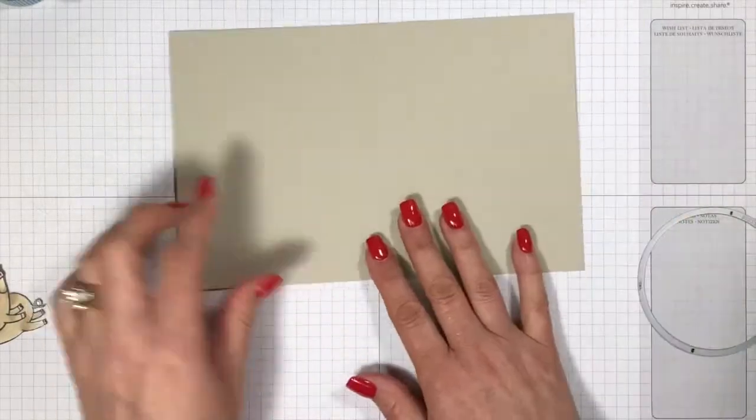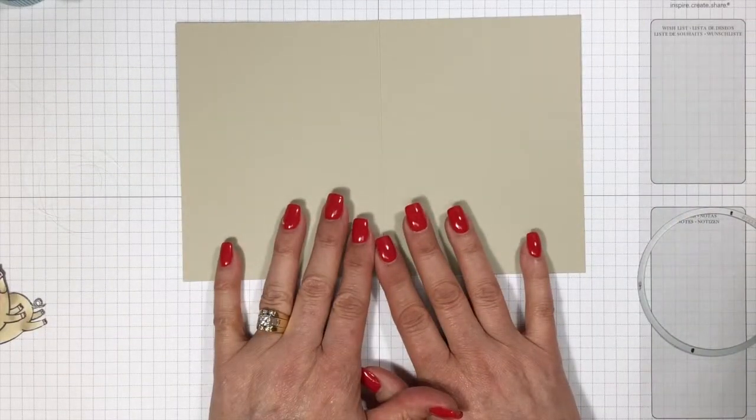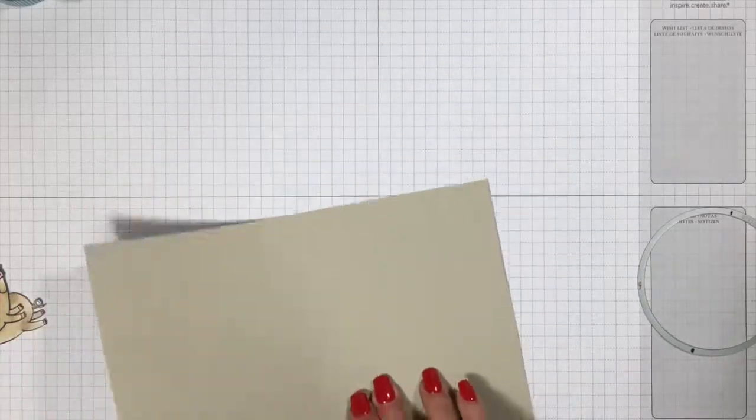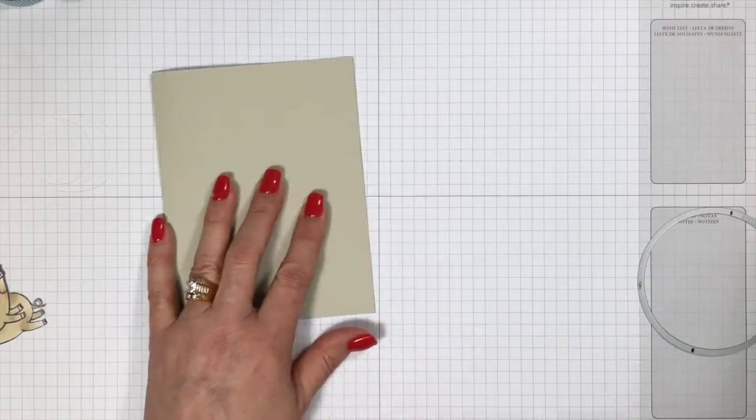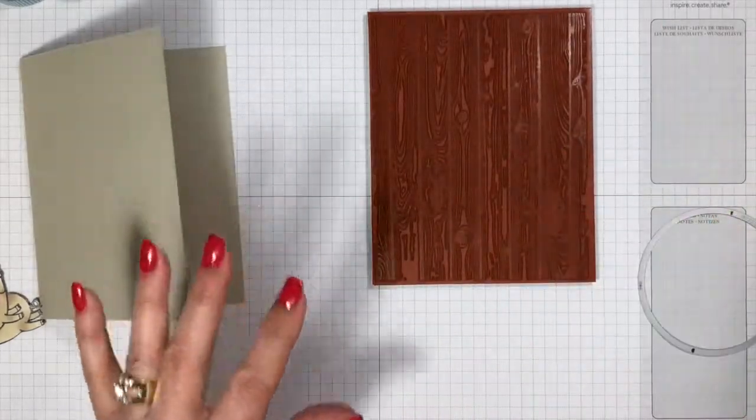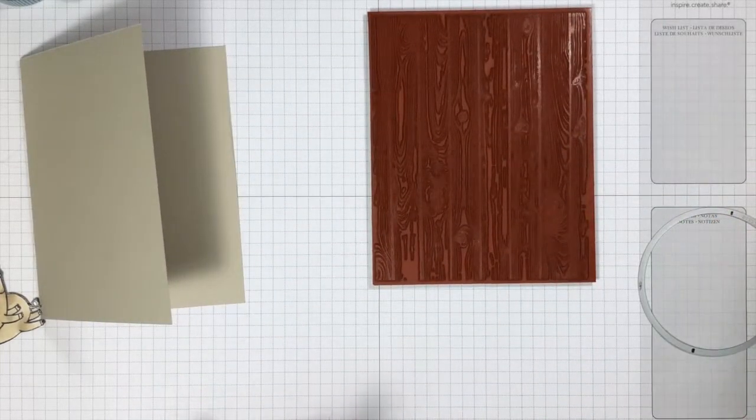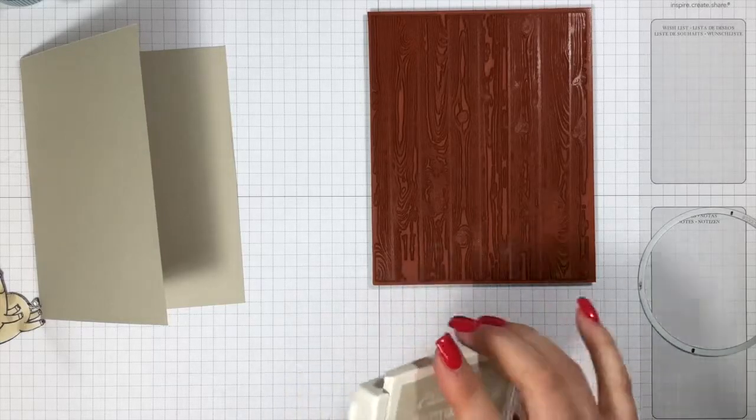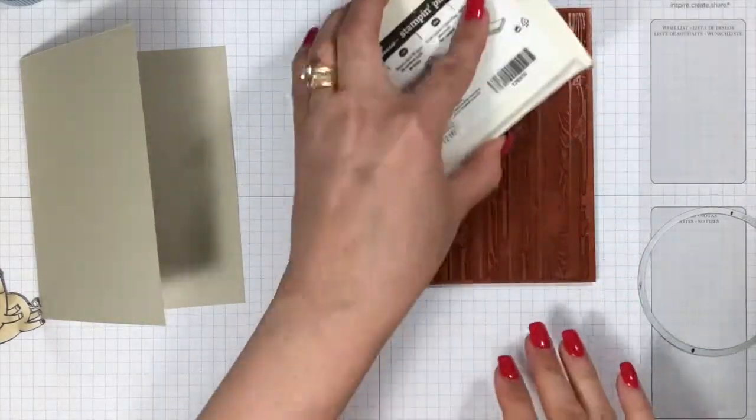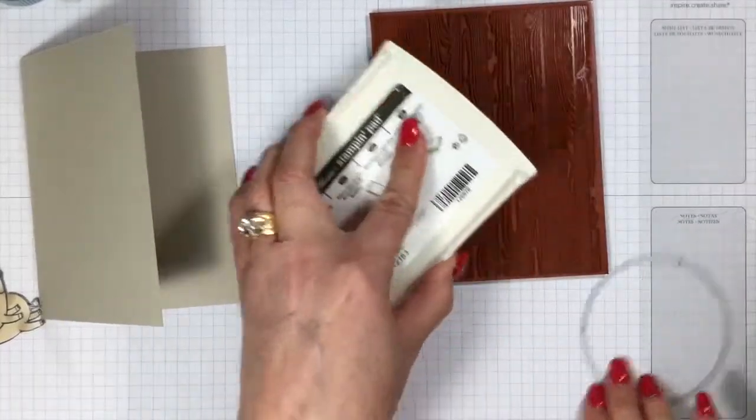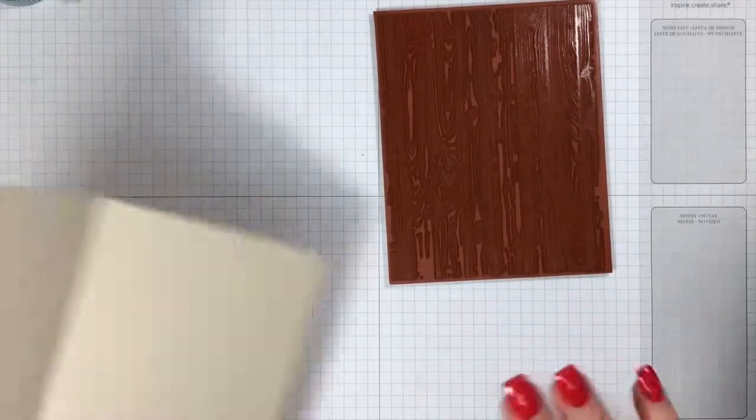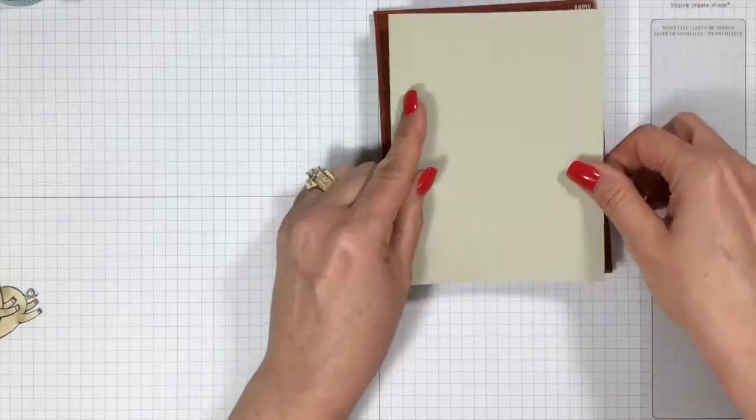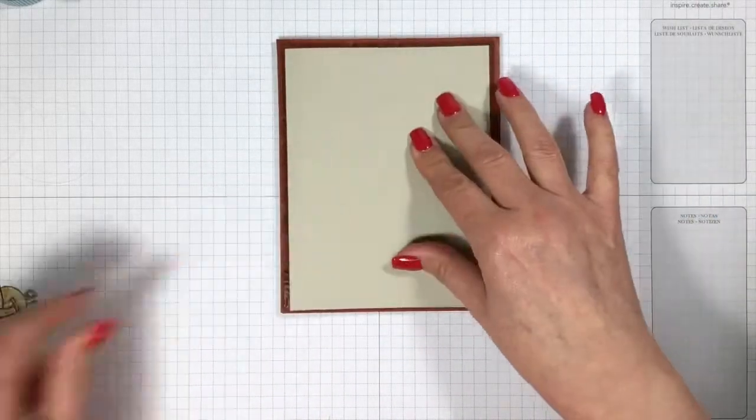I took some Sahara sand. This is just an eight and a half by five and a half. And you're going to score that right down the middle at four and a quarter. I'm going to use the hardwood background stamp and some Sahara ink. And I'm going to stamp three sides of this card. I'm going to do the card front, which is here, just like that.